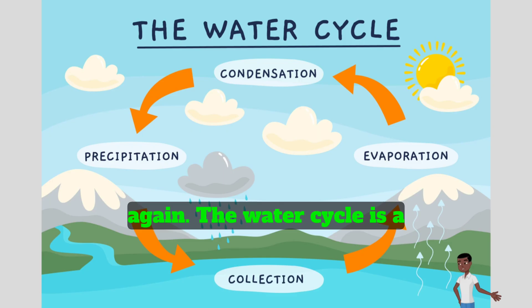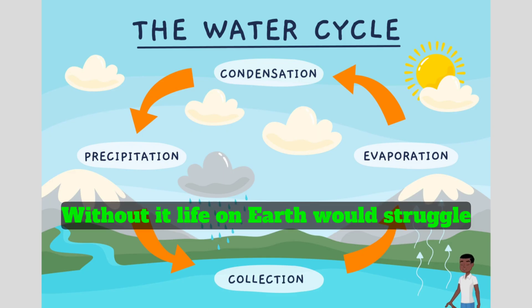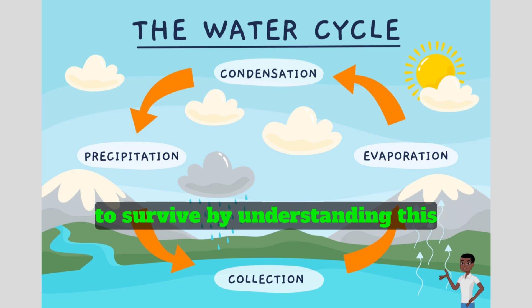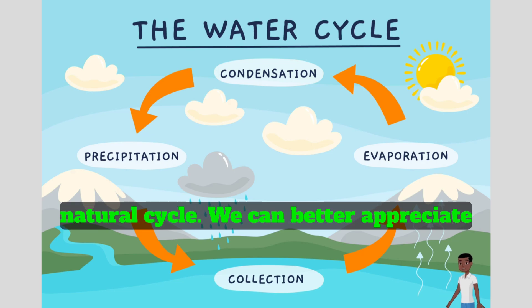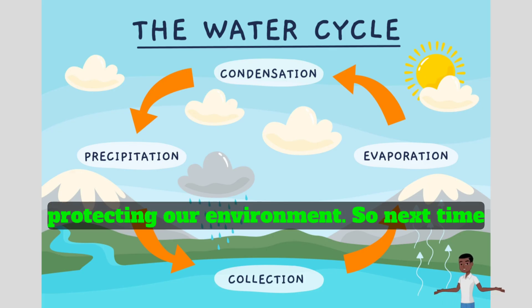The water cycle is a continuous and vital process. Without it, life on Earth would struggle to survive. By understanding this natural cycle, we can better appreciate the importance of conserving water and protecting our environment.